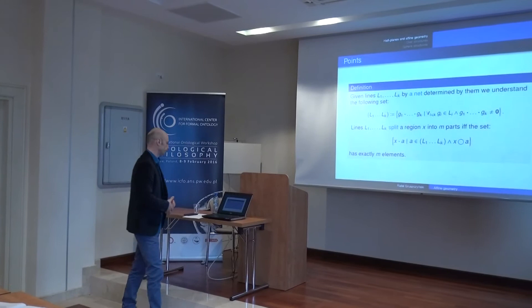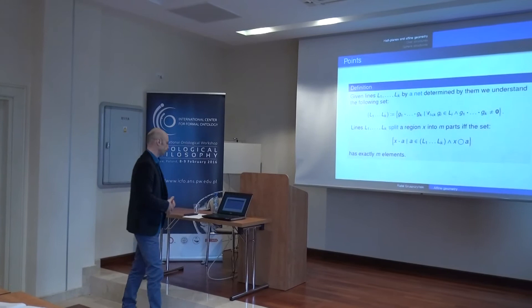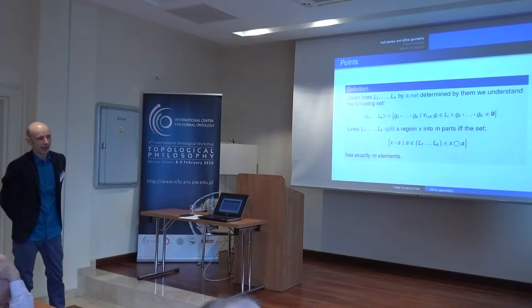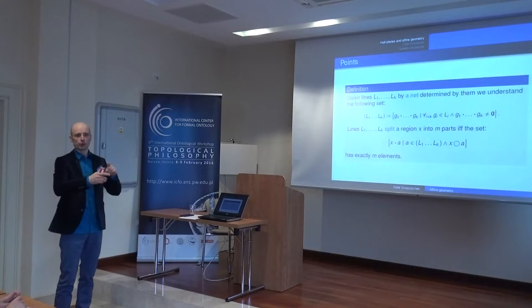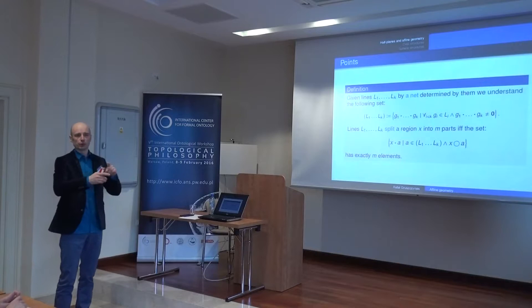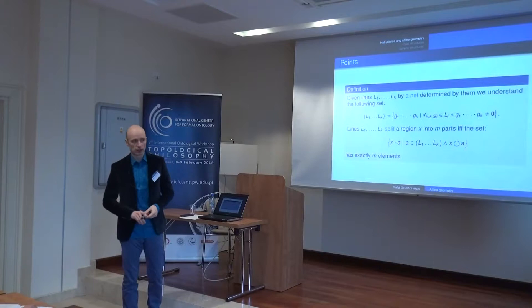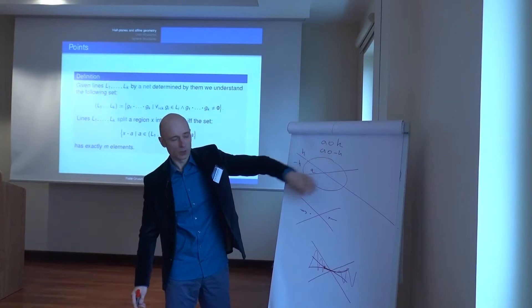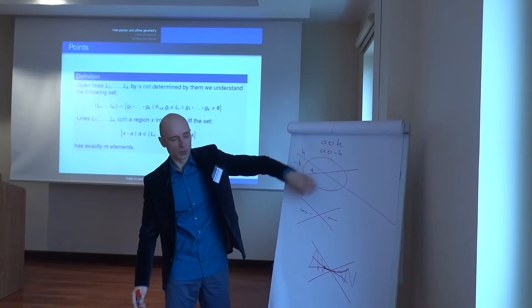What is a net? A net determined by a set of lines is the set of all non-zero regions determined by a set of half-planes — you take all products which give non-zero results. A net splits a region: for example, two non-parallel lines split the region into four parts. A net consists of all non-zero regions.